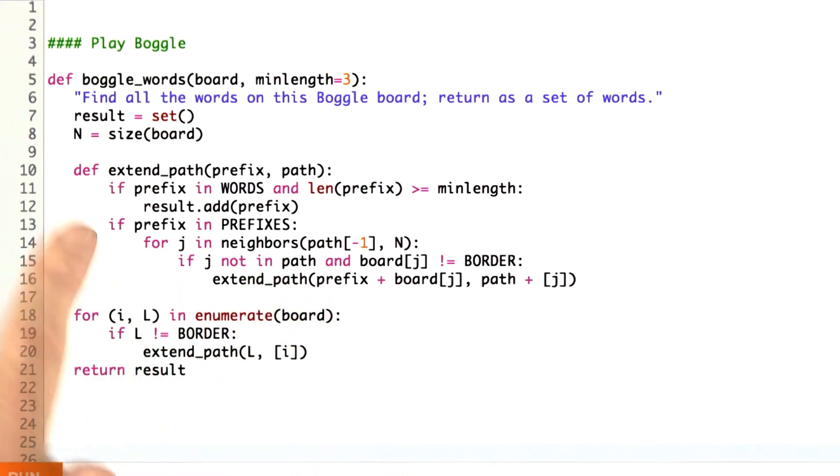And I guess I should say, because extend_path is only seven lines long, I felt it was justified to have it be nested. If it grew much more than ten lines, then I'd be very reluctant to have it be nested. I would probably pull it out.